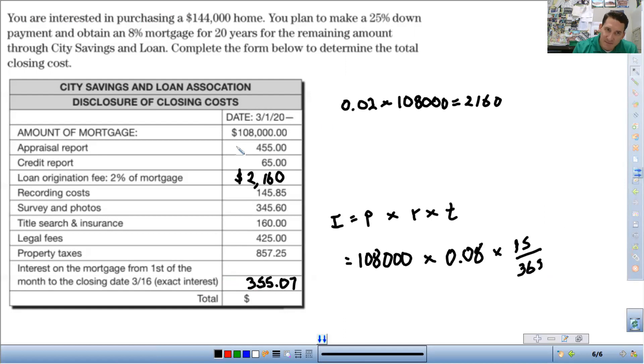And then everything except for the amount of mortgage, we add up all this to find the total closing costs. So 455 plus 65 plus 2160 plus 145.85 plus 345.60 plus 160 plus 425 plus 857.25 plus 355.07. Full closing costs comes out to $4,968.77.